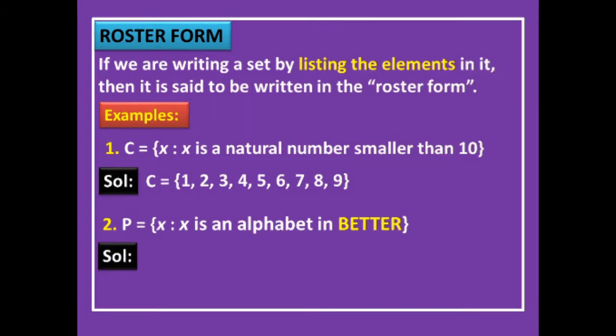Children, we have already seen that in a set the elements will never be repeated. In the word BETTER — B, E, T, T, E, R — E is repeated twice and T is also repeated. So when we write it in the form of a set, we write only P = {B, E, T, R}. Only four letters. Got it, children?